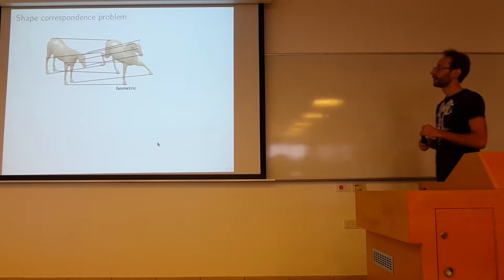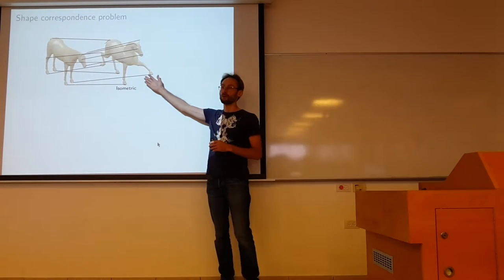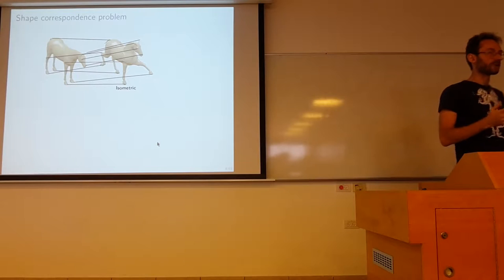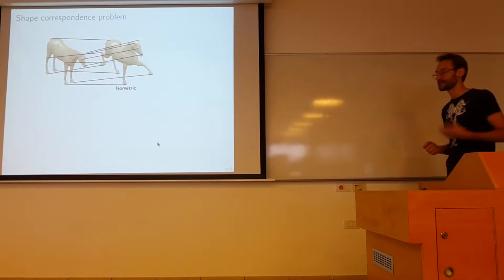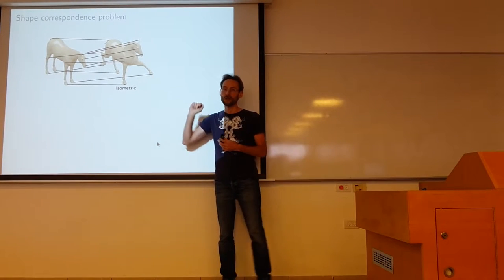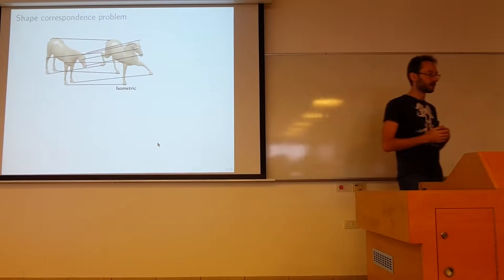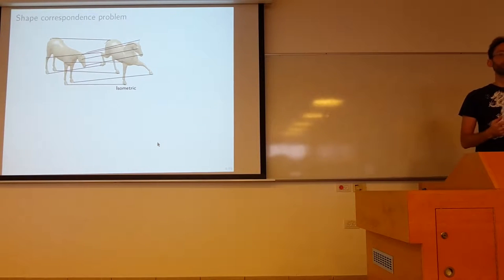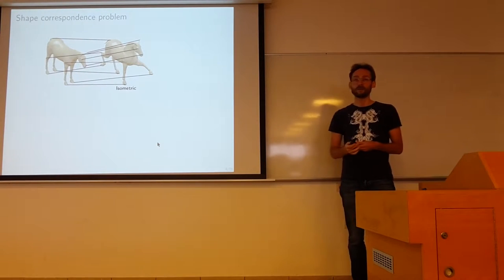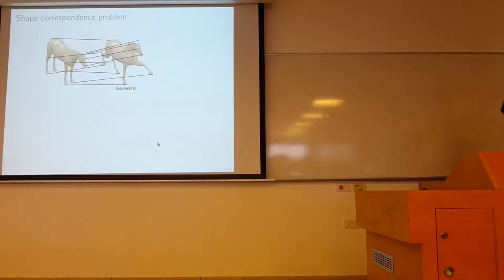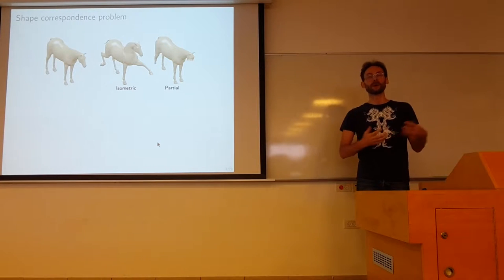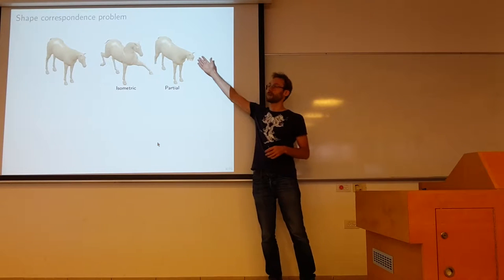Basically the underlying problems of these applications are problems of correspondence. You want to establish a matching between a set of points on two shapes that undergo non-rigid deformations. This is a relatively well-studied problem under several geometric assumptions — Ronnie studied it, and a lot of works have been published if you assume something about the deformations, for example isometric or approximately isometric equations, like near-isometric articulated motions of the human body. It's a relatively well-defined mathematical problem; you can use tools from differential geometry to address it.